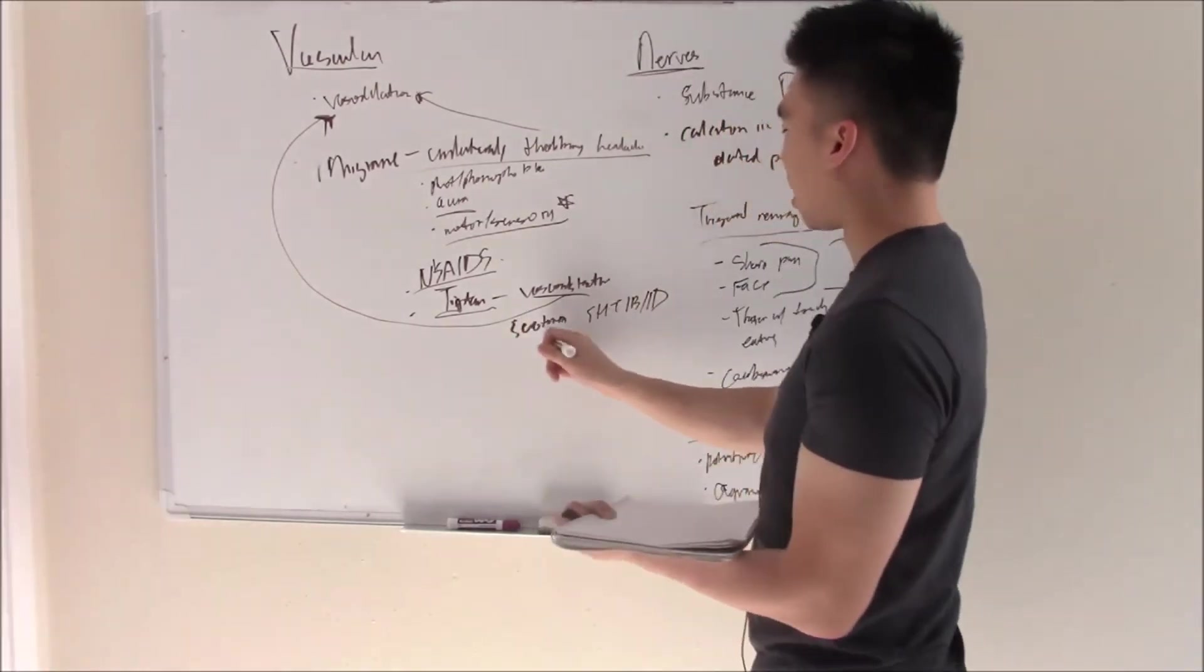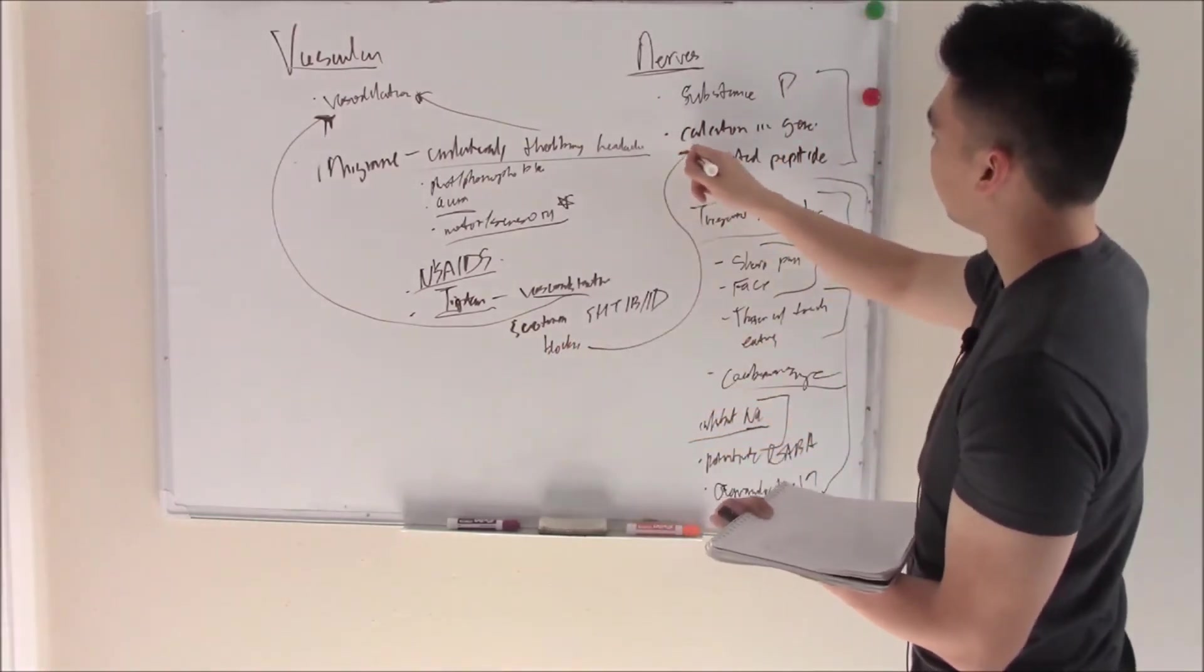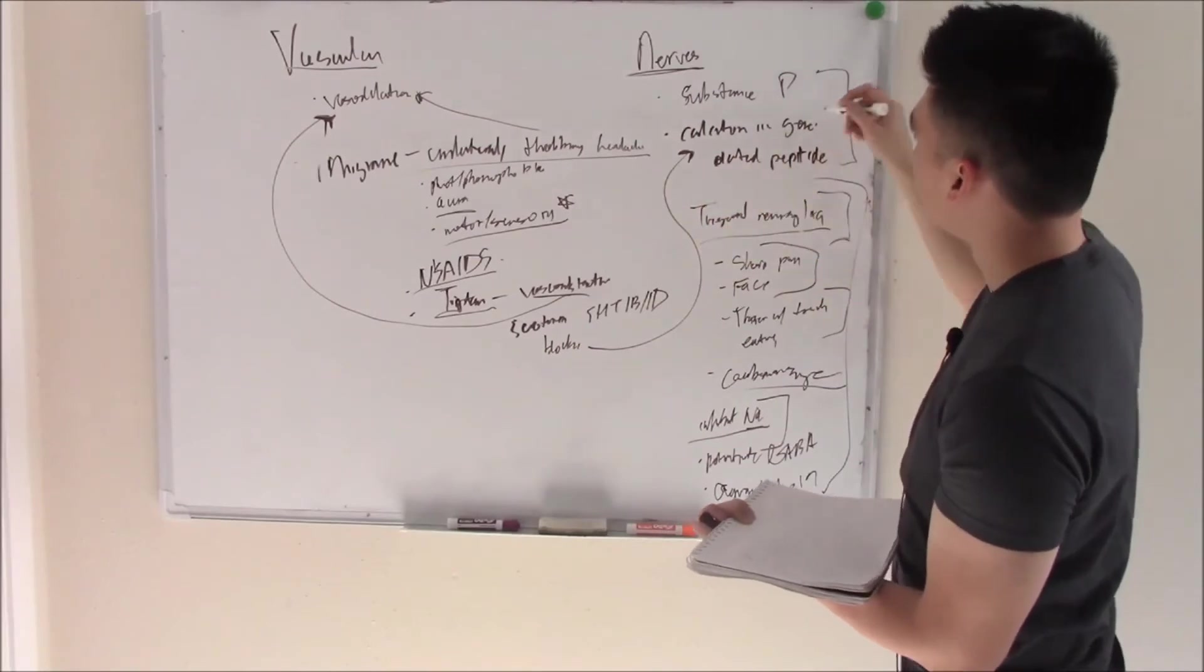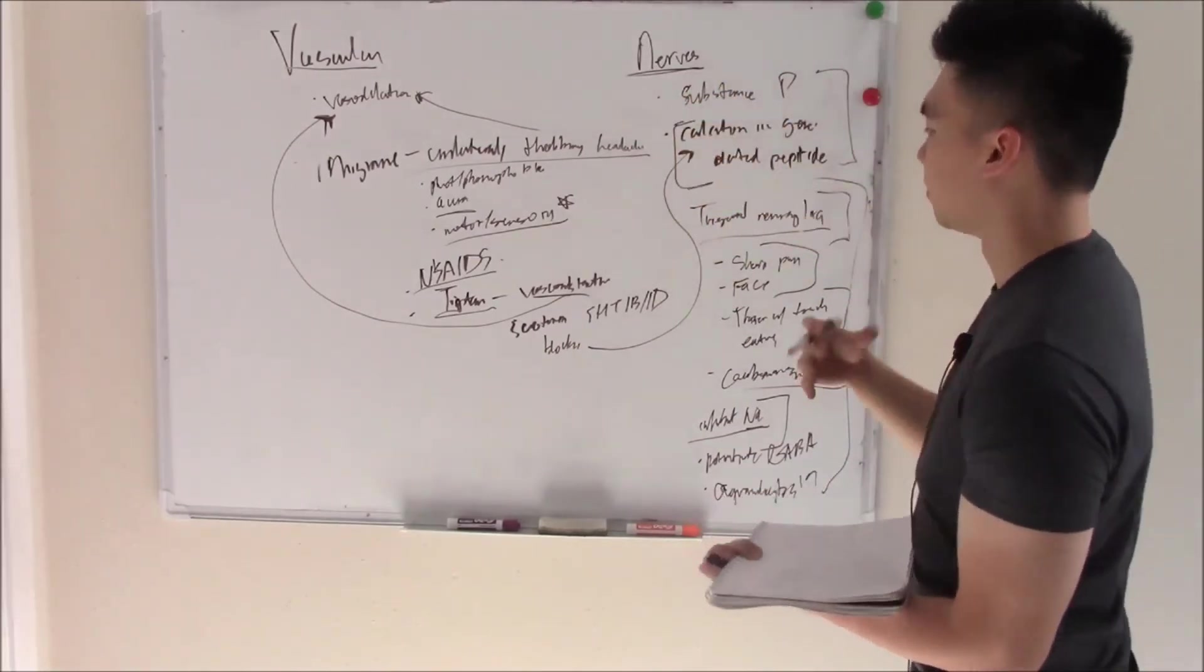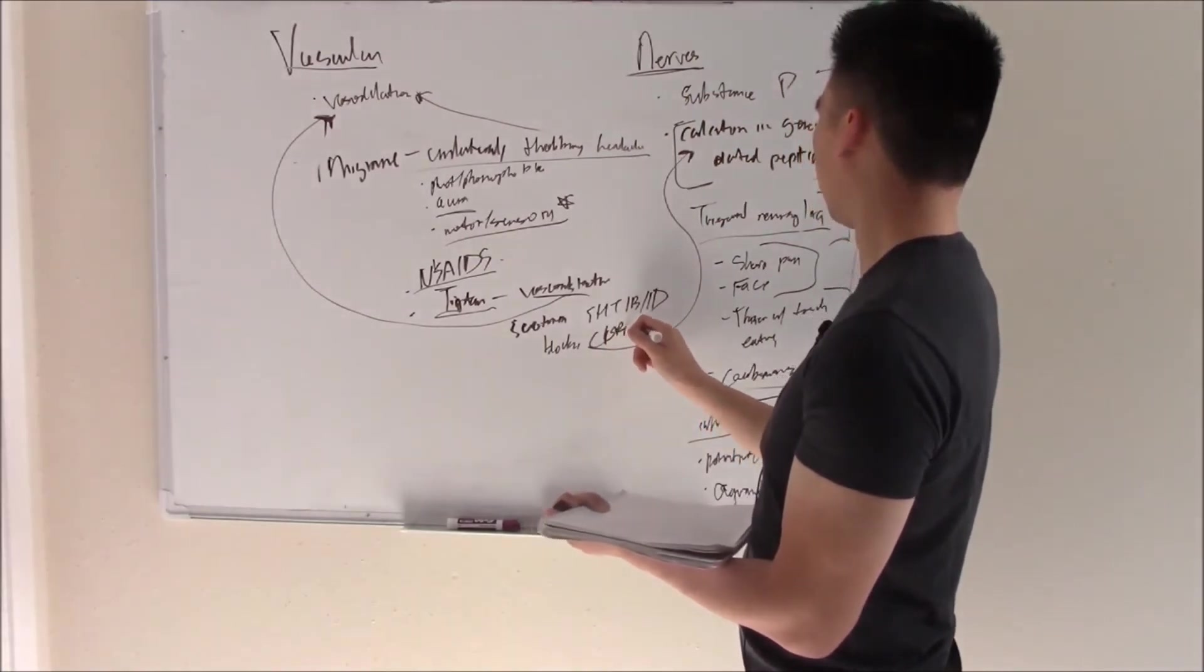It also blocks vasodilating and pain-regulating peptides like calcitonin gene-related peptide. So it blocks CGRP.